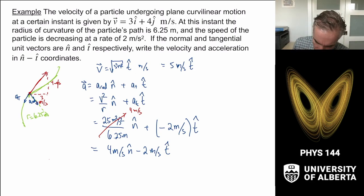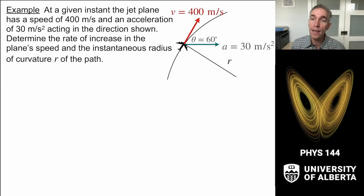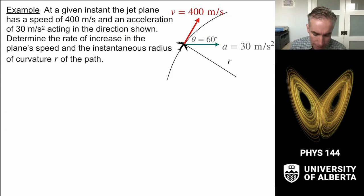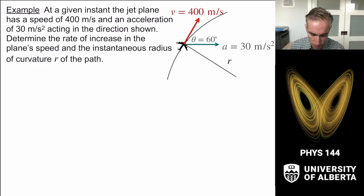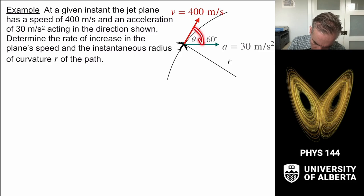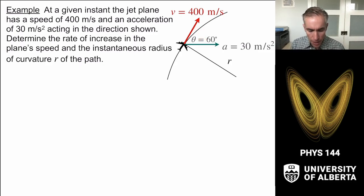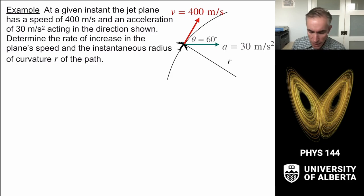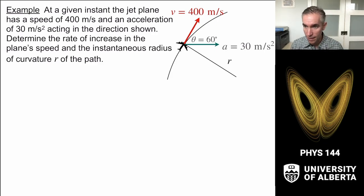Let's try another problem. This one asks: at a given instant, a jet plane has a speed of 400 meters per second and an acceleration of 30 meters per second squared acting in the direction shown. There is a 60-degree angle between the velocity and the acceleration. Determine the increase in the plane's speed and the instantaneous radius of curvature of the path.